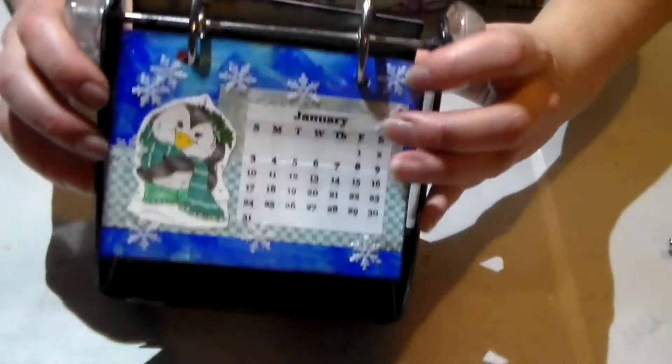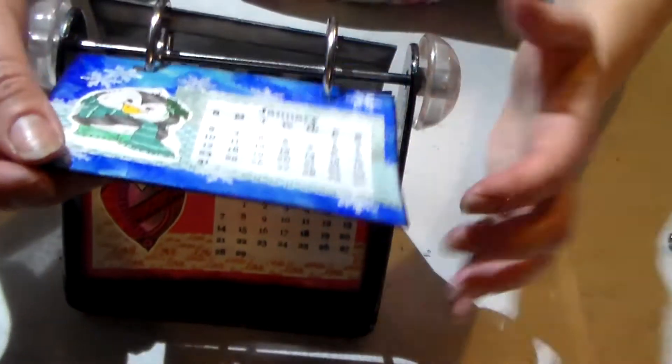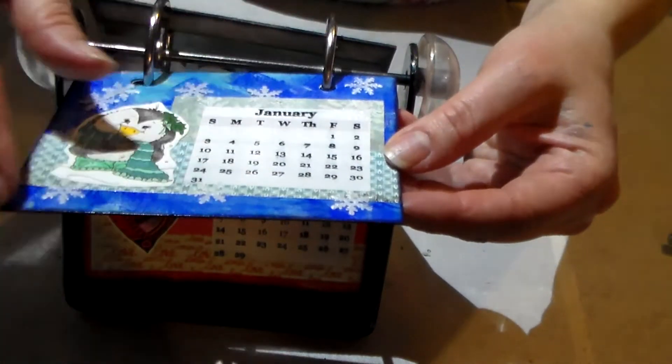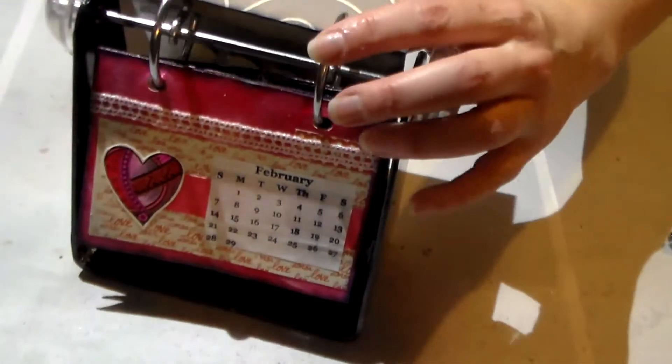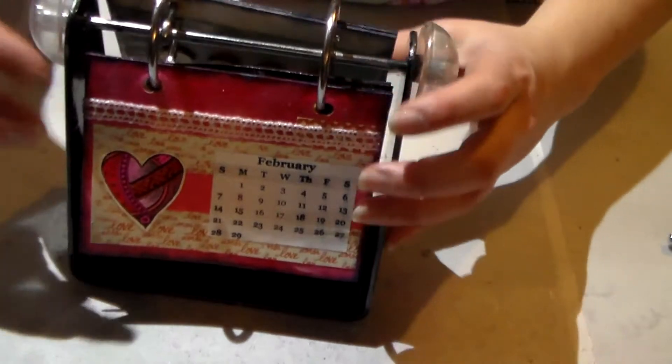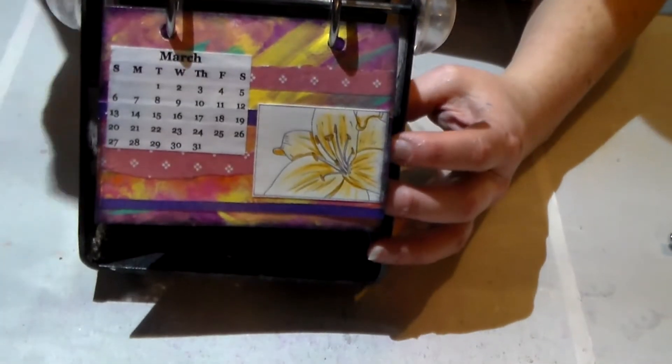So this is the month of January and I've edged all the edges of it with archival black ink so that it would give it a finished look. Here's the month of February, March,